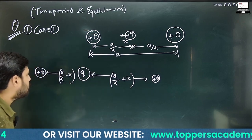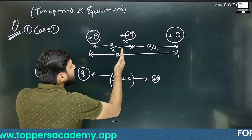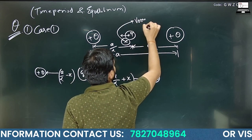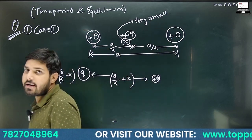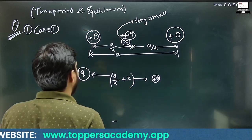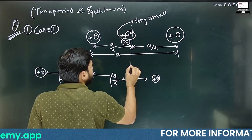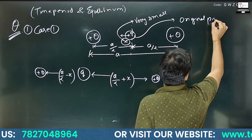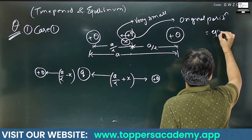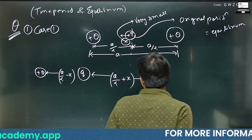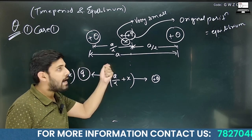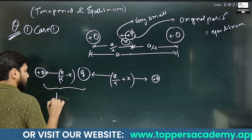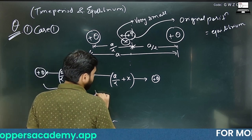The original position was in equilibrium. Whenever we displace the charge by x toward any of the larger charges, this distance will decrease and at the same time the other distance will increase.